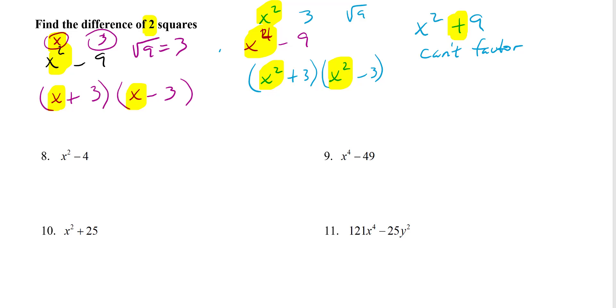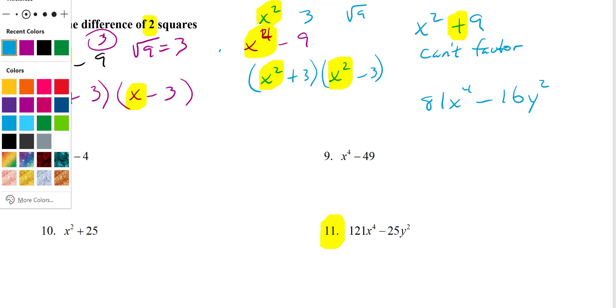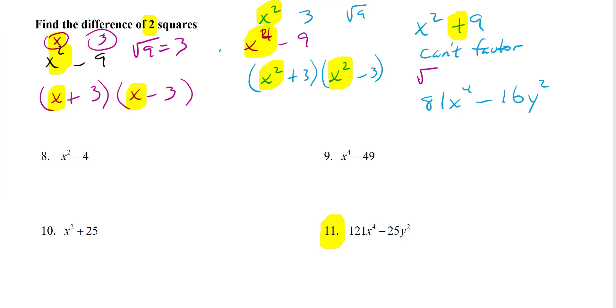And then if you get something a little more complicated, like number 11 here, that's gonna look like this. So if I do 81x to the 4th minus 16y squared, you're going to take the square root of 81, which is 9.